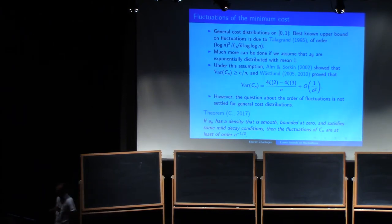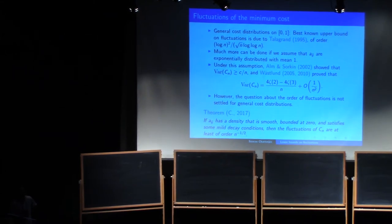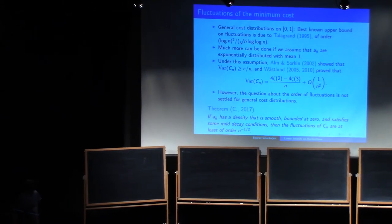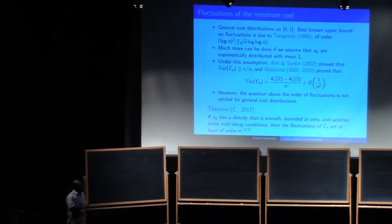So Wastlund told me that if the costs are exponentially distributed, then there is a relatively simple argument using the memoryless property to get this result, which I don't think has been written down anywhere. But for general densities, this is, you know, nothing like this was known. So I think in the next slide, I'm going to come to random matrices, finally. Just a little bit, you know, I think, one slide I have on random matrices. But any questions before that?